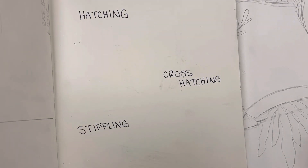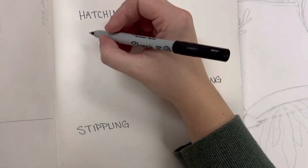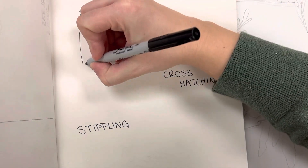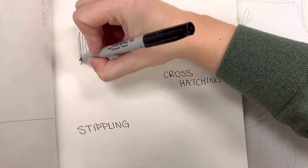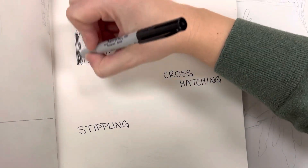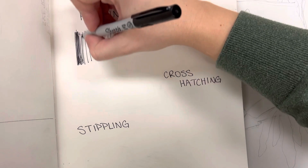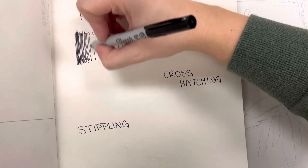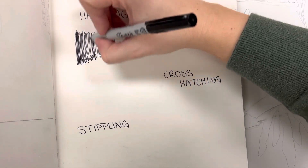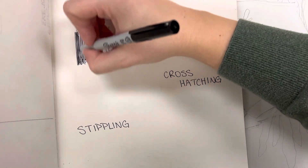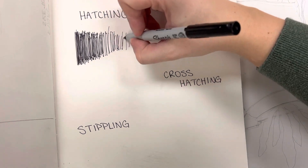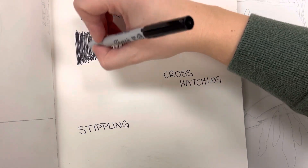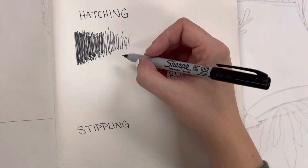Here are some techniques to use a Sharpie to create value. The first one is hatching, and that is creating a lot of lines that all go in the same direction. Where you want it to be darker, you're going to create a lot of lines, and then as you move towards the lighter area, you're going to have less lines. So we're going from dark to light.